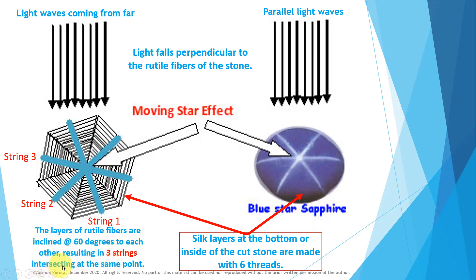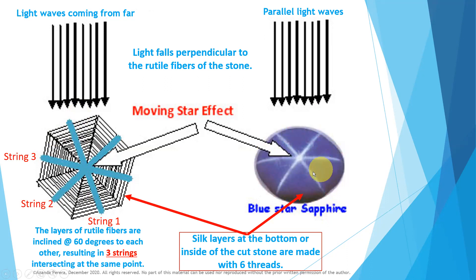Resulting in 3 strings intersecting at the same point — the intersecting point is this. When light waves come perpendicular to the surface, it creates 3 strings. It is like a moving star. So this is called blue star sapphire. The silk layers at the bottom or inside of the cut stone are made with 6 threads. This is the light waves creating the star. Star effect is this.